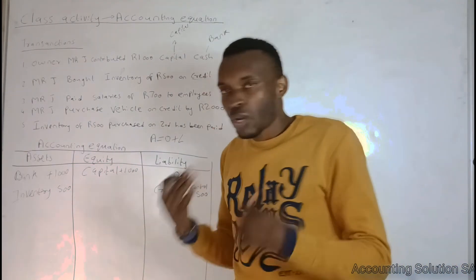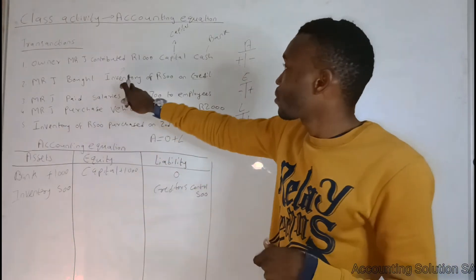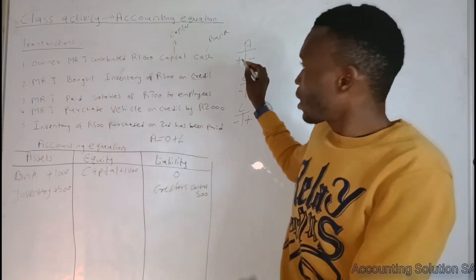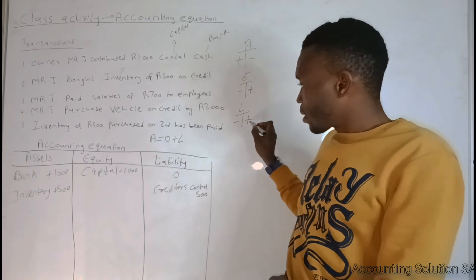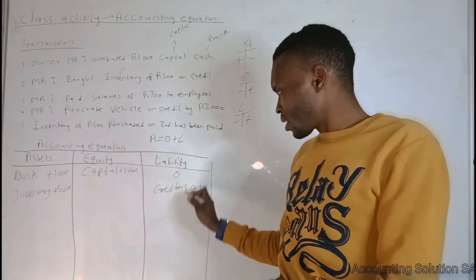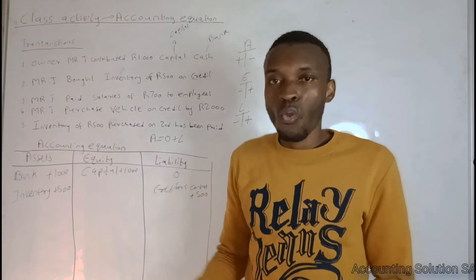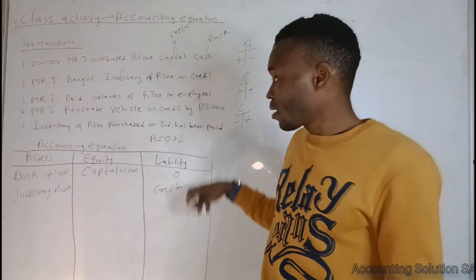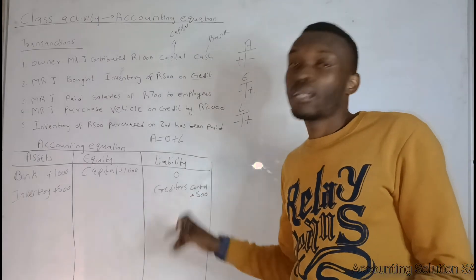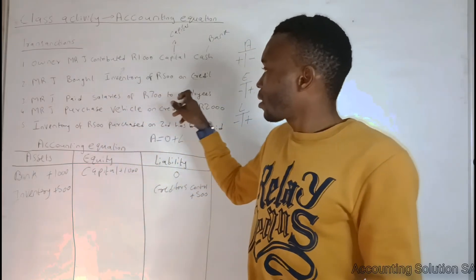Now for the signs: did we receive inventory? Yes, we received inventory, so our assets increase — that is a plus. Because we debited the asset, we must credit the other side, giving a plus on the liability. Our liability goes up because we owe more money since we haven't paid that person yet.